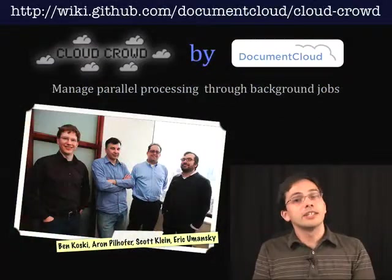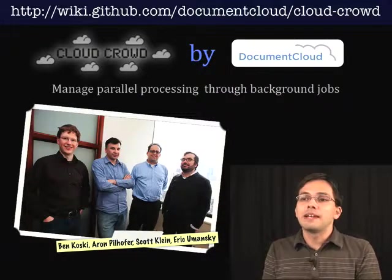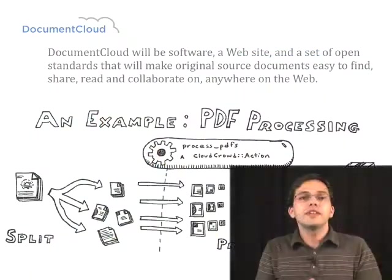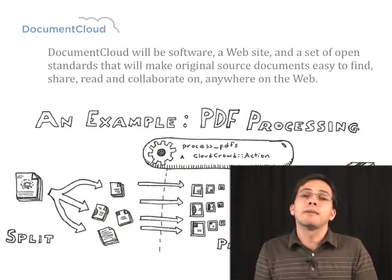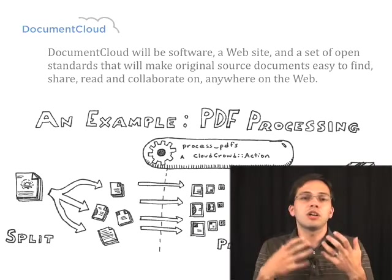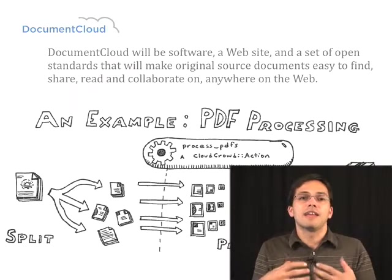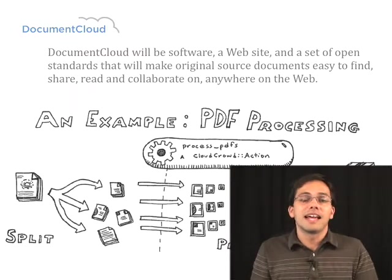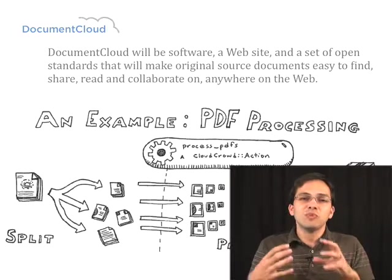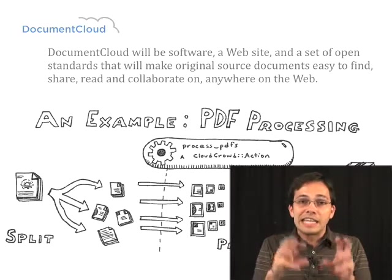Next up, we're going to take a look at Cloud Crowd, made by the guys at Document Cloud, which allows you to manage parallel processing through background jobs. The guys over at Document Cloud are creating a web application that will allow you to upload any sort of large documents — whether they're PDFs or otherwise — and make them viewable on the web and searchable. One of the problems they had to solve was how do they really quickly, once you upload a PDF, parse through that and get that online?